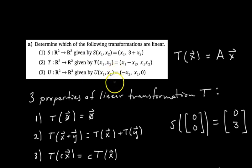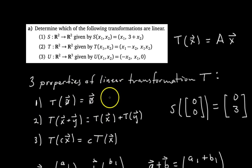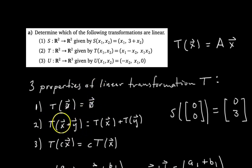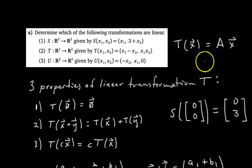In summary, if you're given a problem like this, go through and test each of the three conditions. To do that, come up with generic vectors like A and B, compute one side, compute the other side, and see if they're equal. If they are, the condition is met. Also very important: if a transformation has a standard matrix T(X) = AX, then it's automatically linear.